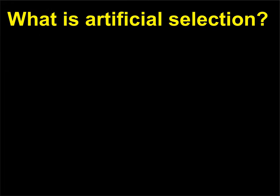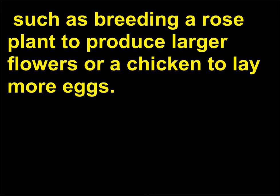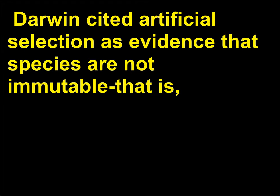What is artificial selection? Artificial selection is the selective breeding of organisms for a desired trait, such as breeding a rose plant to produce larger flowers or a chicken to lay more eggs. Darwin cited artificial selection as evidence that species are not immutable — that is, unable to be changed by selection.